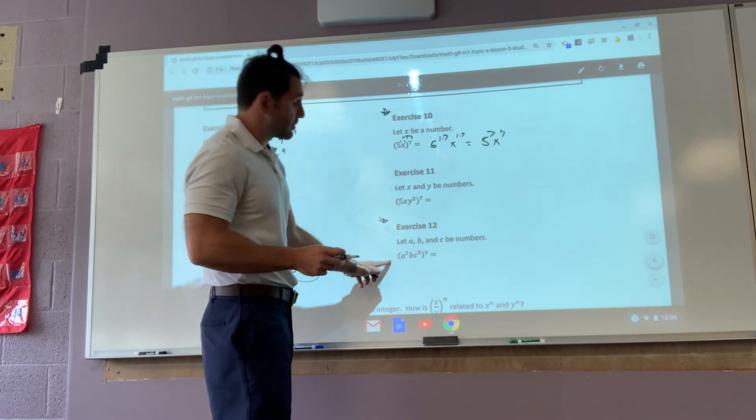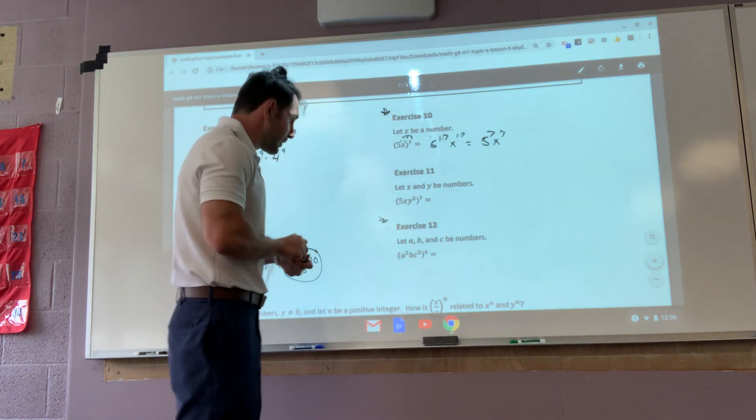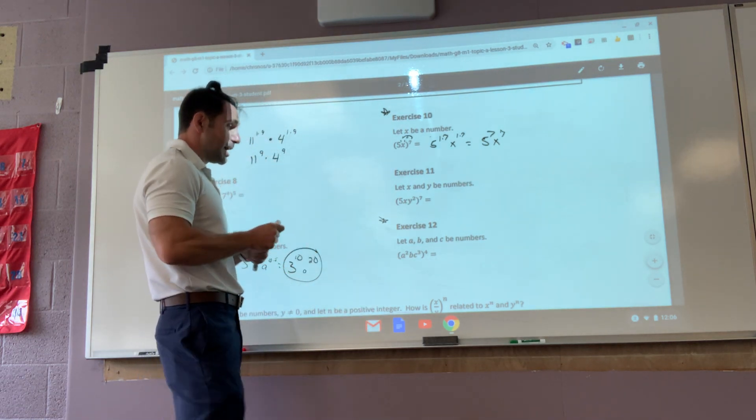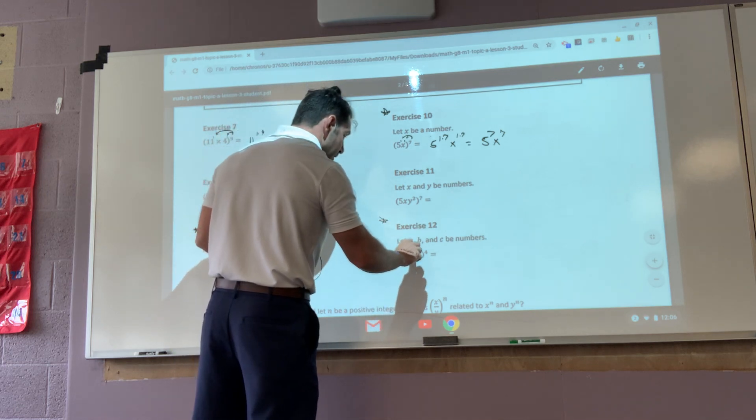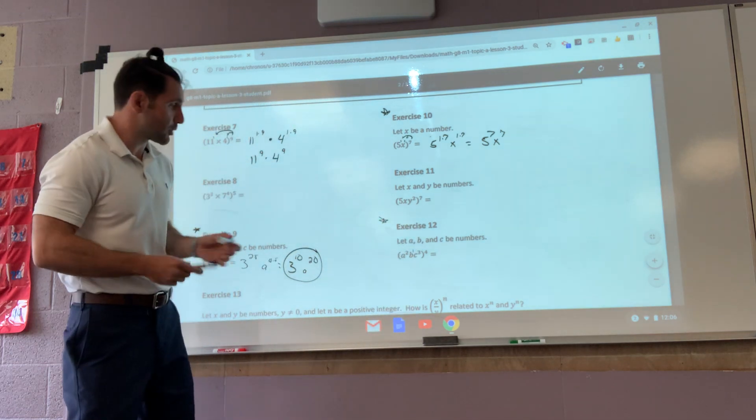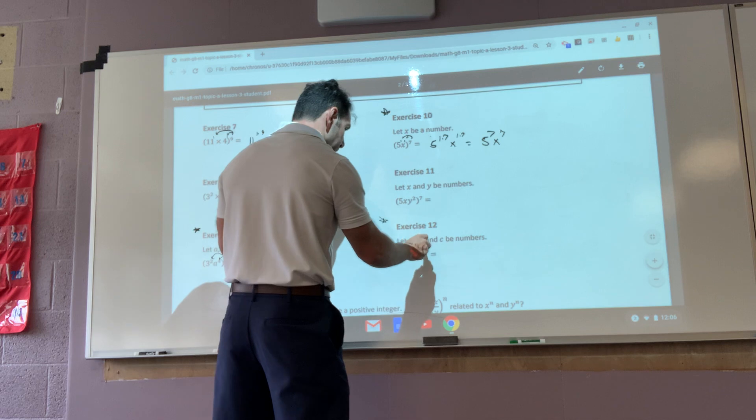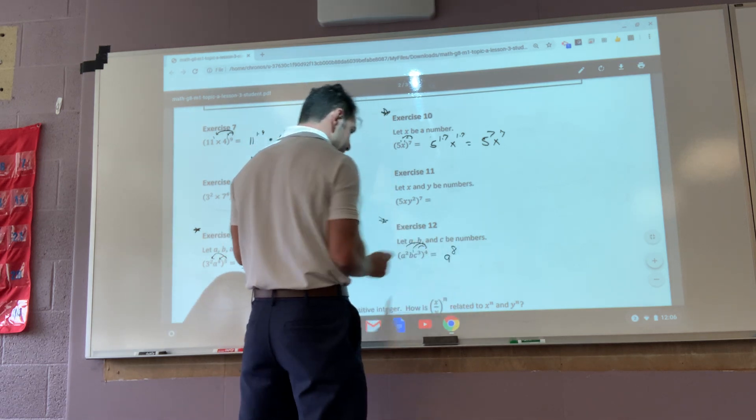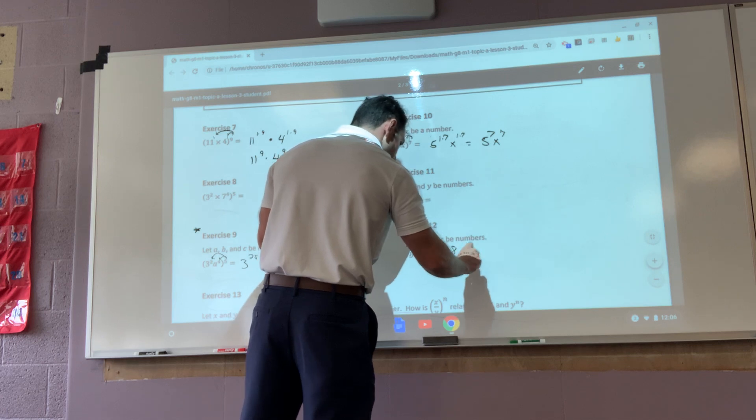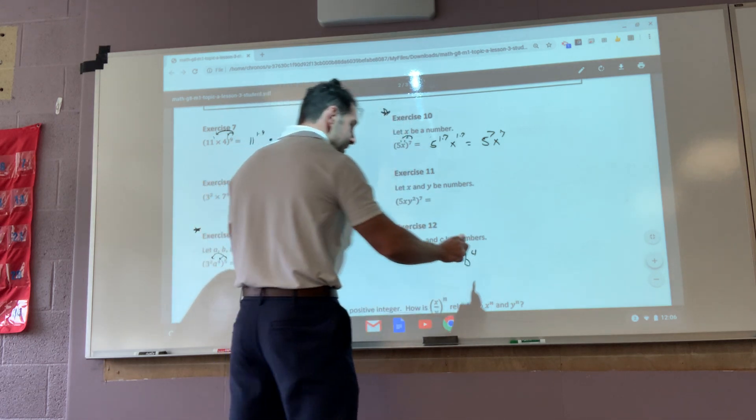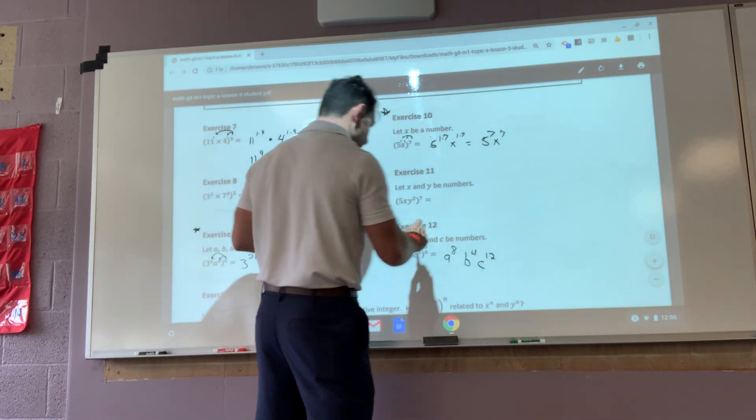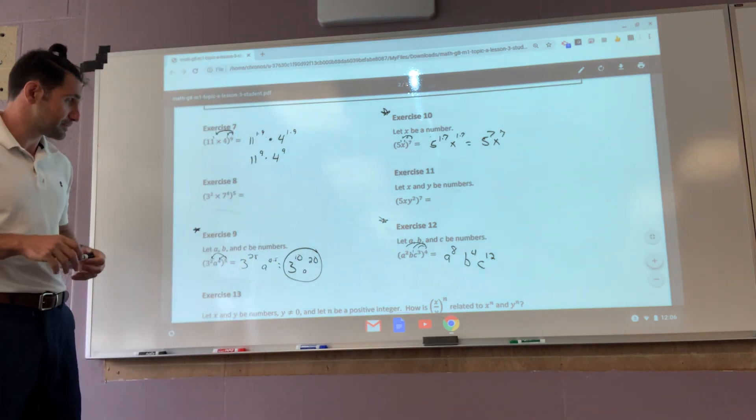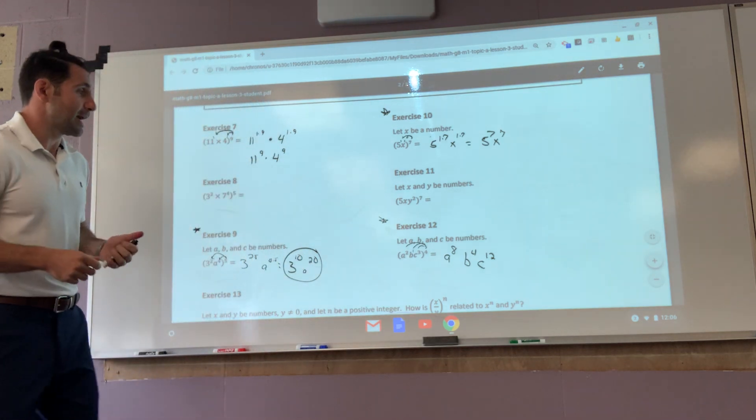This is where a lot of you are going to make mistakes. Make sure everything has an exponent. A squared, B to the first, C to the third. Now I can multiply. That gives me A to the eighth, two times four. B to the fourth, four times one. C to the twelfth, four times three. Last but not least, what happens if it is a rational?